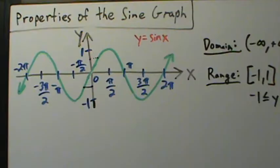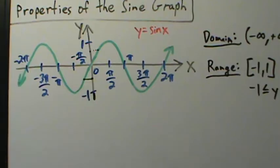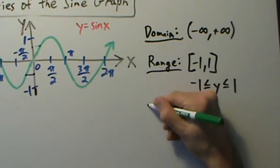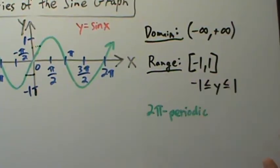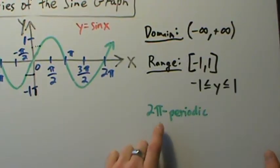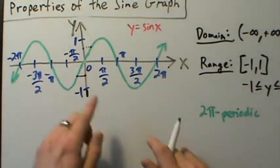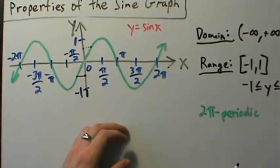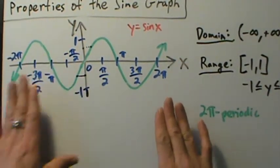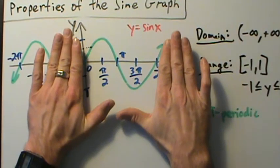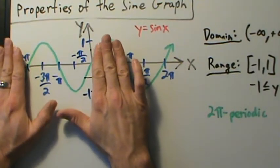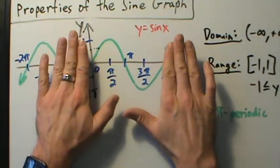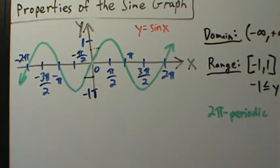We know that this function is periodic — we talked about that in an earlier video. This is 2π periodic, meaning the function has period 2π. So if you start at any x value and go 2π units to the right or to the left, everything starts repeating. We saw that in the animation. From 0 to 2π we have this basic shape; from 2π to 4π, that exact same shape repeats. From negative 2π to 0, same shape, then 0 to 2π — same shape again. Every 2π units, all the y values start repeating.